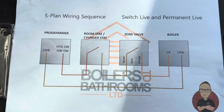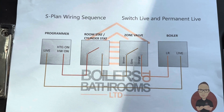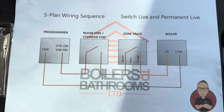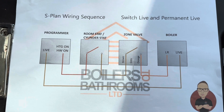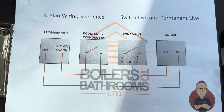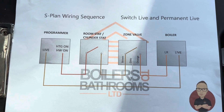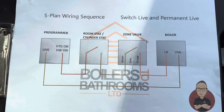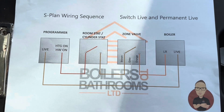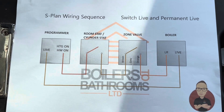The good thing about S-plan is it doesn't matter whether it's your heating zone valve or your hot water zone valve because the process is still the same. It has to go from your programmer to your room stat or cylinder stat, then to your zone valve, then to your boiler. The colors on the cables don't change — it's basically just depending on what rooms and cylinders you have and what programming you have.